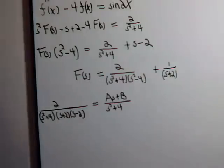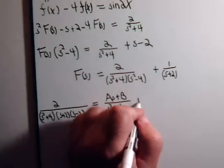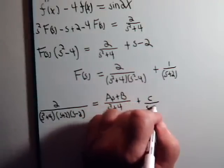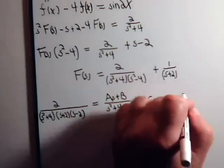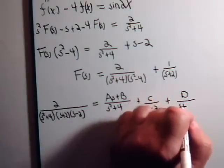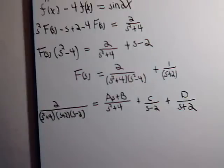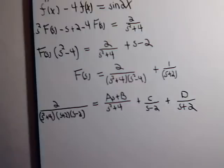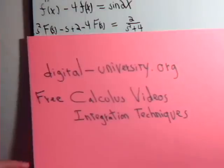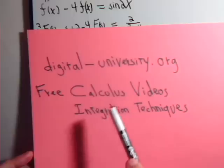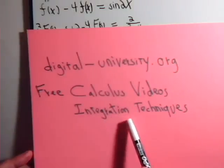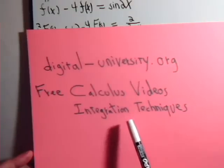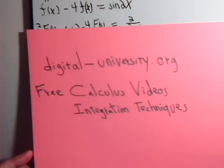Plus, and let's see, we have the two linear terms. We have plus c over s minus 2, plus d over s plus 2. Now, remember this is how we handle quadratic terms here. And again, if you're a little bit rusty on your partial fractions technique, if you go to Digital University and look under the free calculus videos and then go to the integration techniques section.